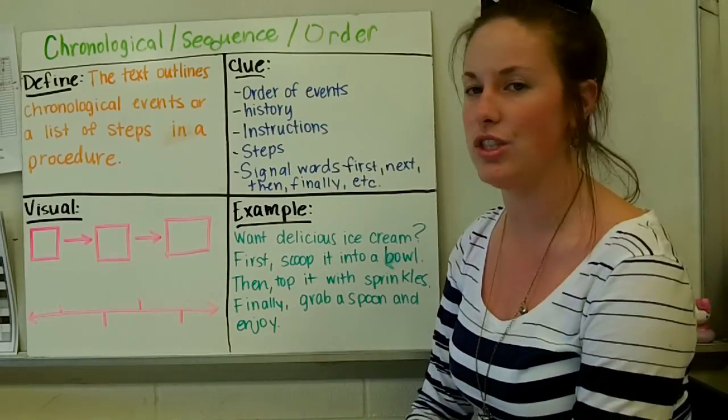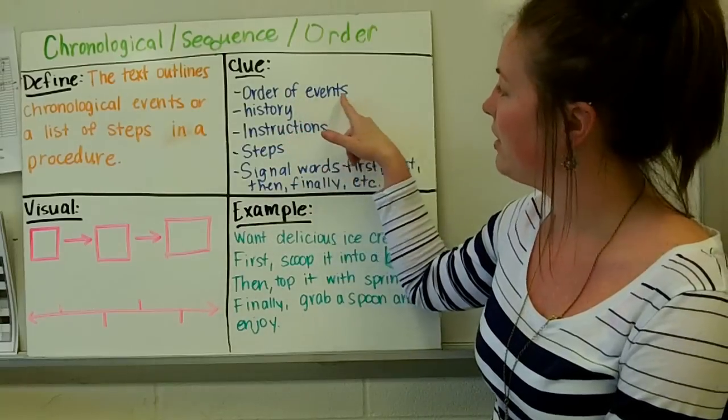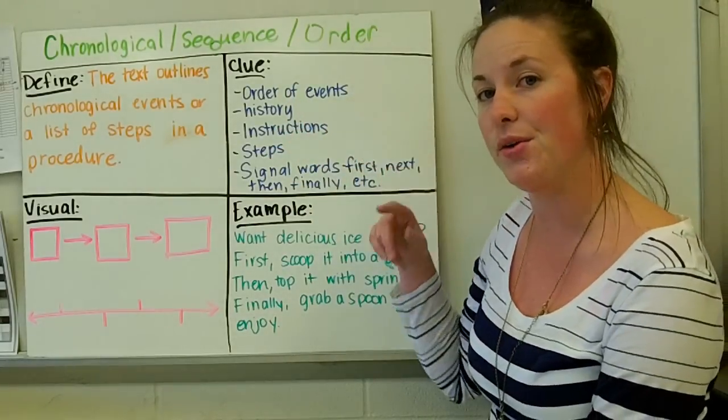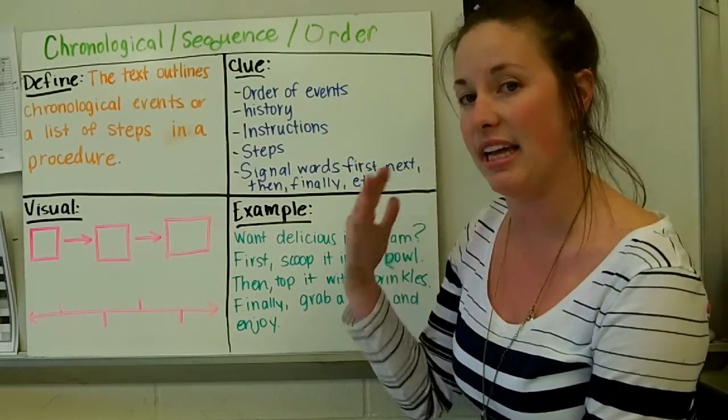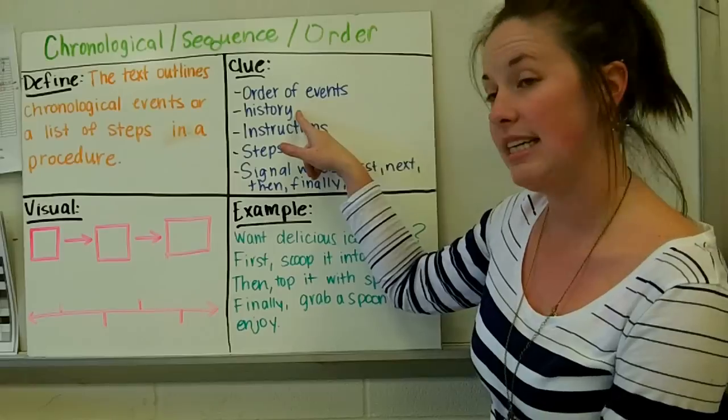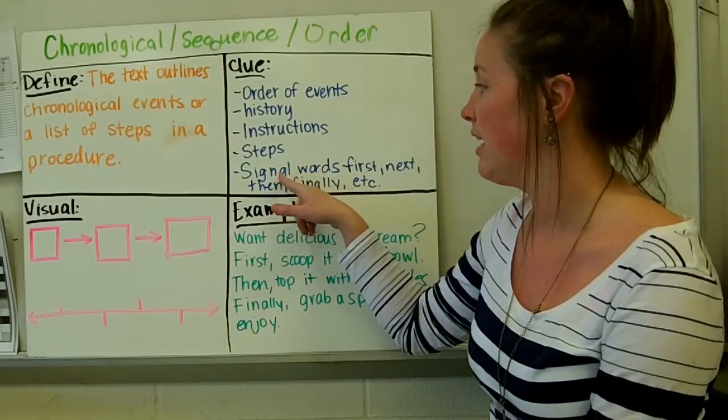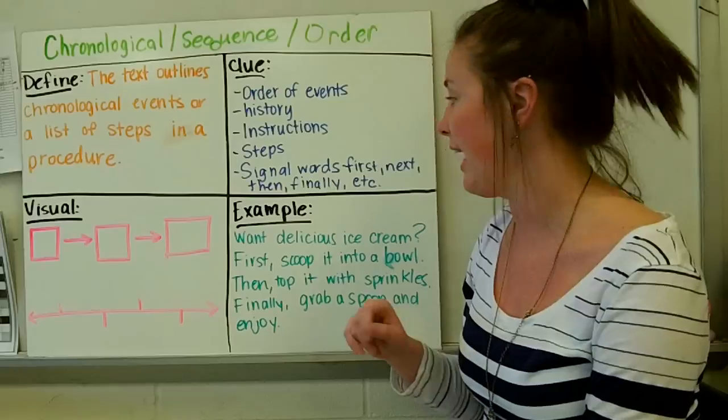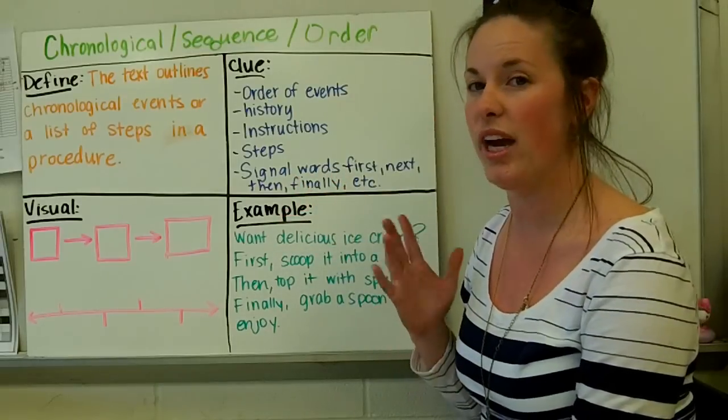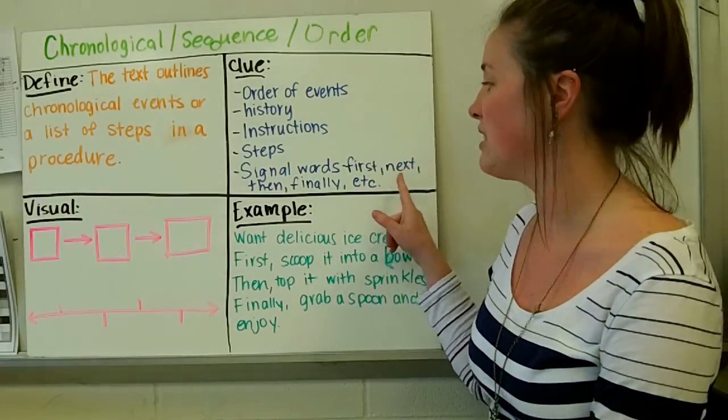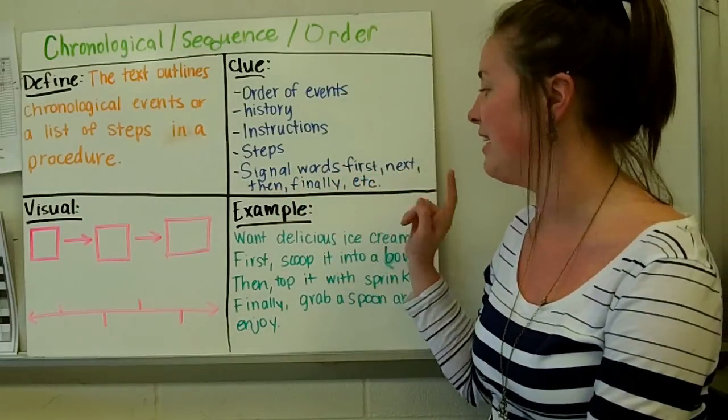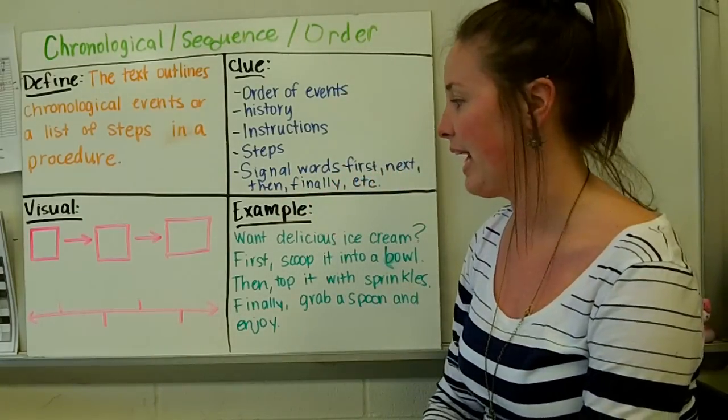Possible clue words that you could use. You could look at the order of events. Does it tell you what is going to happen first, second, third, fourth? Is it history? Is it giving you instructions or does it have steps? Another good thing for you to look at are signal words. And we all know the signal words: first, next, then, finally, and etc.